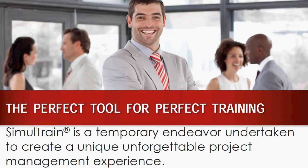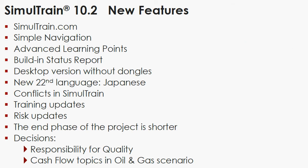To summarize, the new features of Simultrain are: the new website Simultrain.com, simple navigation, advanced learning points, built-in status report, desktop version without dongles. You can request this information at STS. A new 20th language has been added: Japanese.